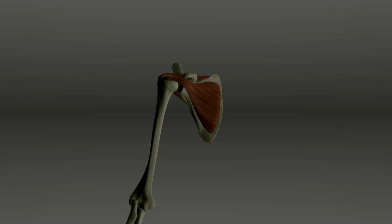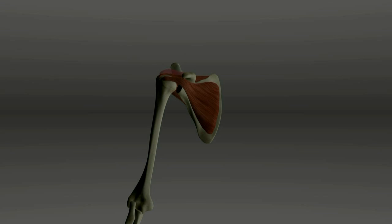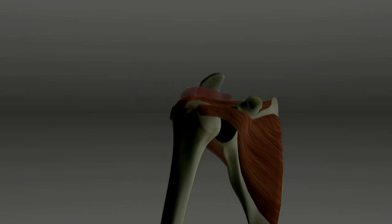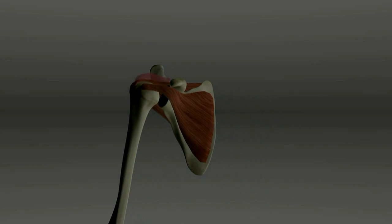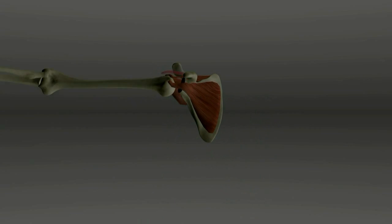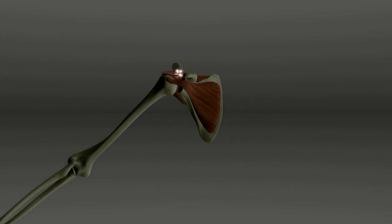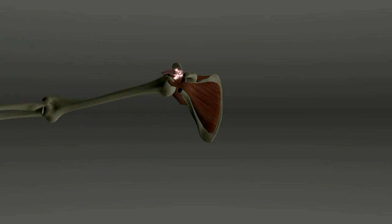Rotator cuff pain can begin with shoulder impingement. This is when the space underneath the acromion, part of the scapula, becomes too tight for the rotator cuff tendons to pass through. This often happens when a bone spur forms on the bottom of the acromion. Each time the arm is lifted, the rotator cuff tendons rub against the acromion. This irritates the tendons and can eventually begin to wear at them.